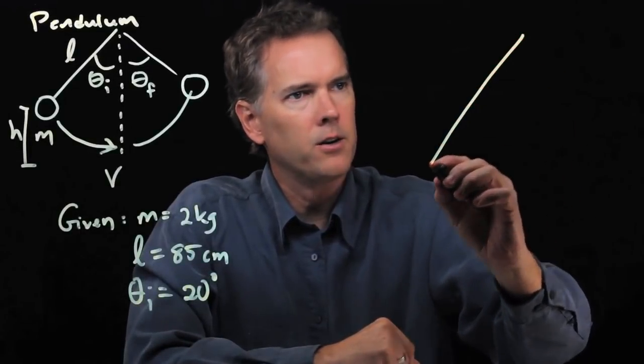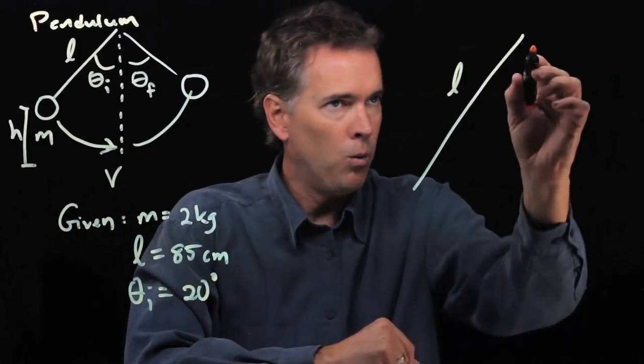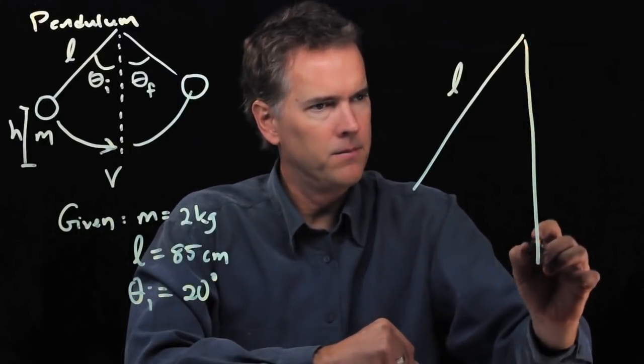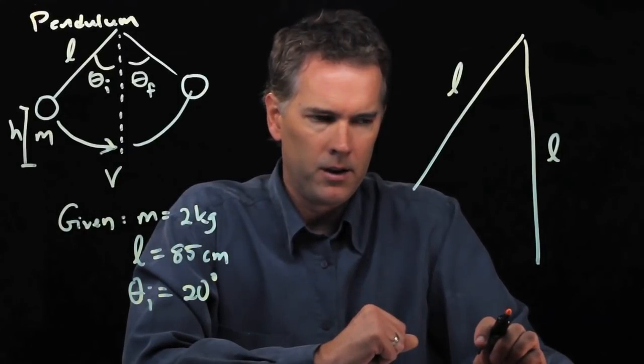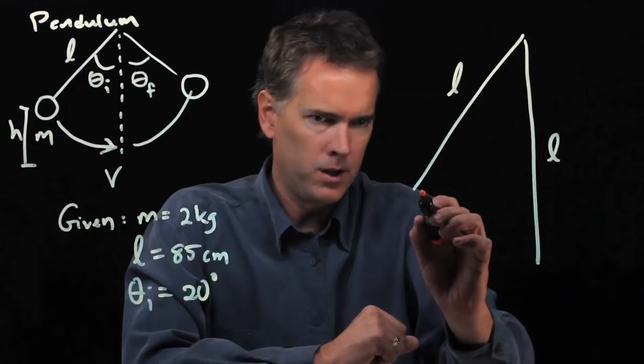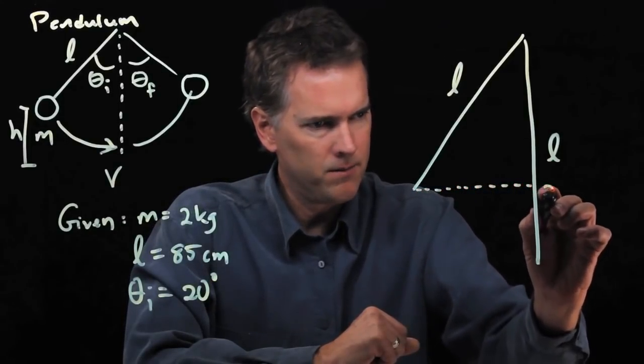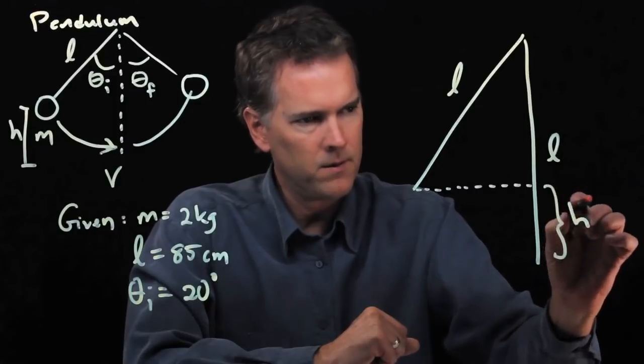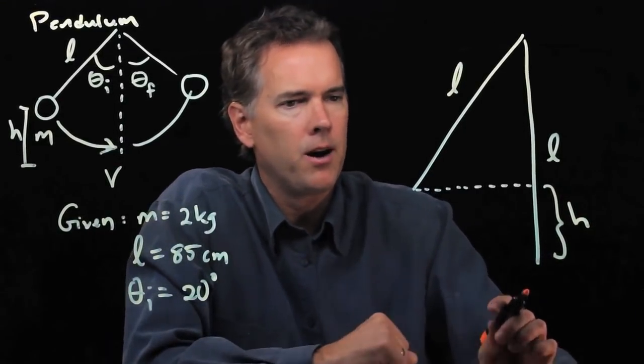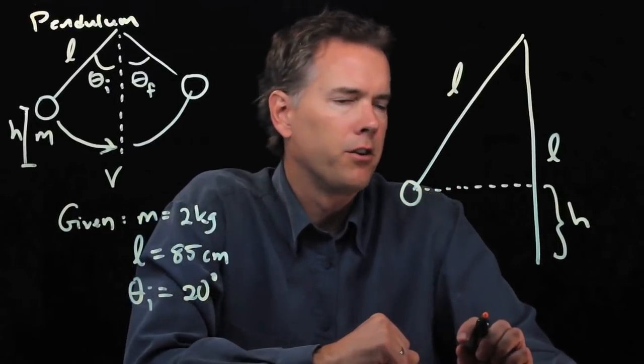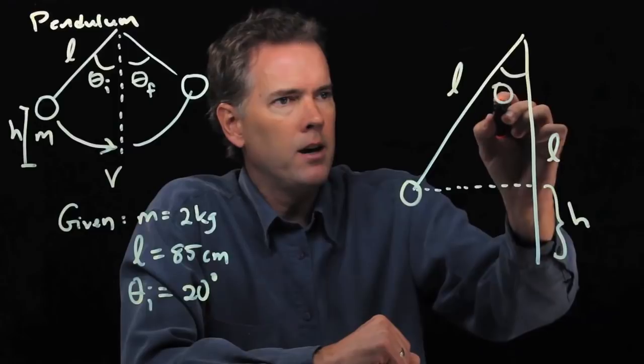Let's redraw this triangle just a little bit bigger. This is l. When it's at the bottom, that's also l. It's the same string. And so the height that we want is this right here, that little section h. That's how high it is above the ground when it starts. There's its starting point. What do we know?